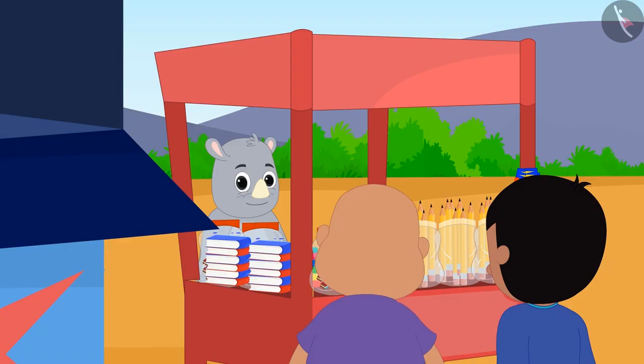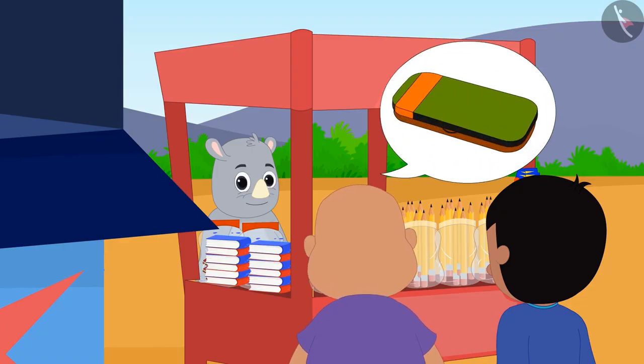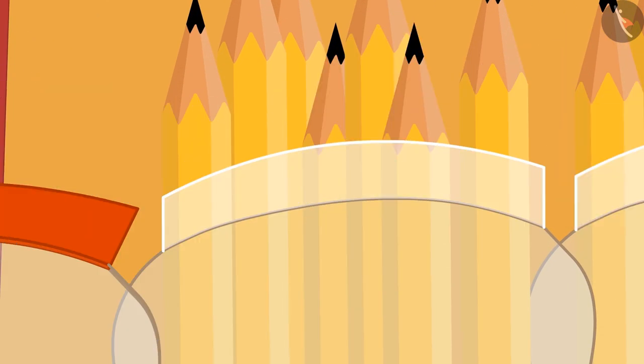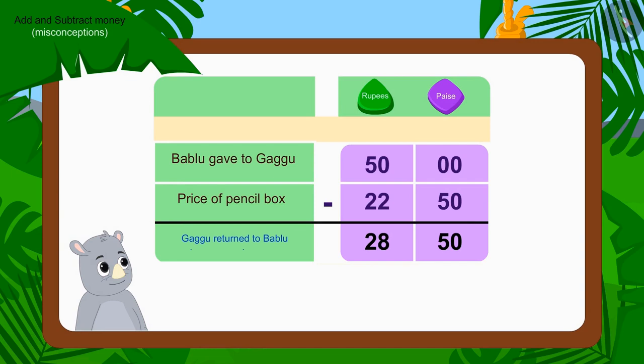Now Bablu asked for one pencil box from Gaggu and gave a fifty rupee note to Gaggu. In this way, Gaggu deducted twenty-two rupees fifty paise of the pencil box from rupees fifty and returned twenty-eight rupees fifty paise. Children, has Gaggu returned the right amount to Bablu? Let's see.